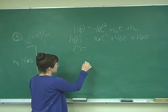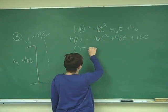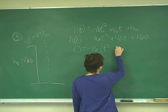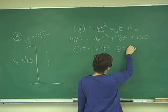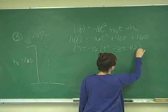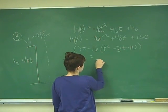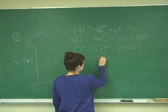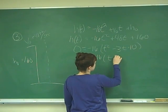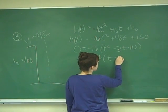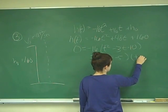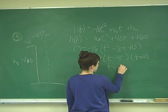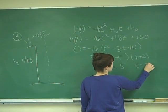So we set our value equal to zero. And here I'm going to factor out a negative 16 and we'll have t squared minus 3t minus 10. And I can factor this to be t minus 5 and t plus 2. So this would mean that t equals 5 and t equals negative 2.